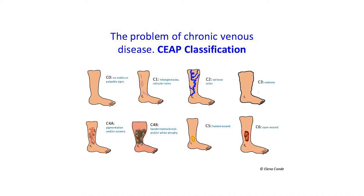We'll pop the classification on the screen now. You'll see that we start from zero, which is no varicose veins, no spider veins — there's nothing really. It's a good thing if you're a zero. We aim to get people to a zero, and we do get patients coming in who think they have veins and they don't.